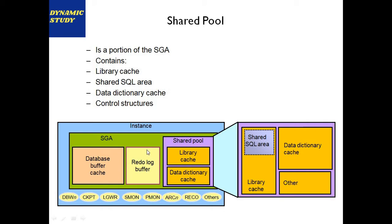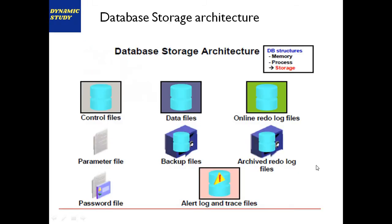In the structure, shared pool contains library cache and data dictionary cache, along with the Global Connection Area (GCA). The GCA stores connection information — what time a user logged in, how many resources they are utilizing, and related session details.